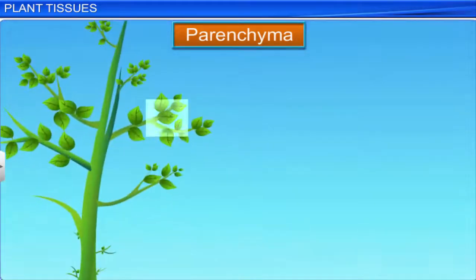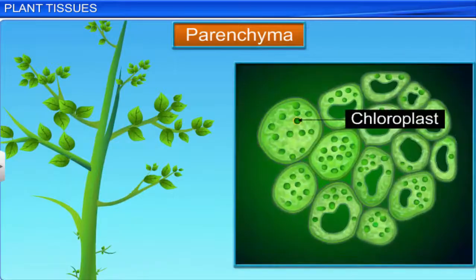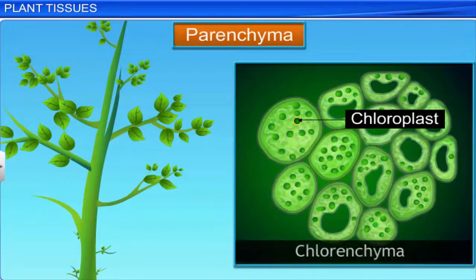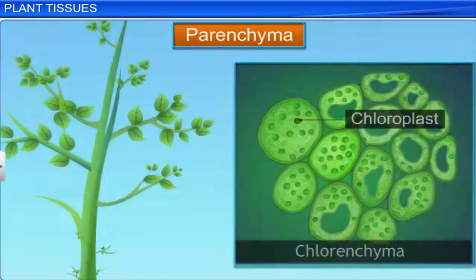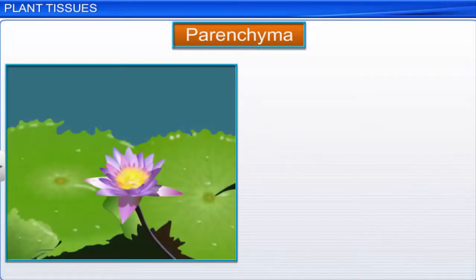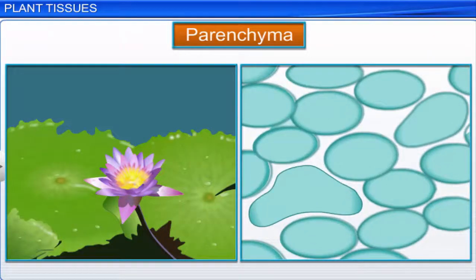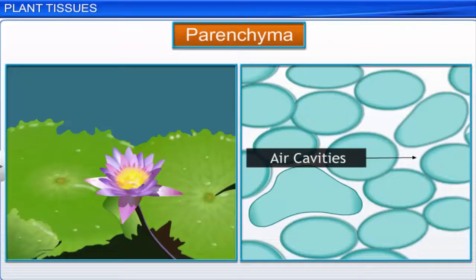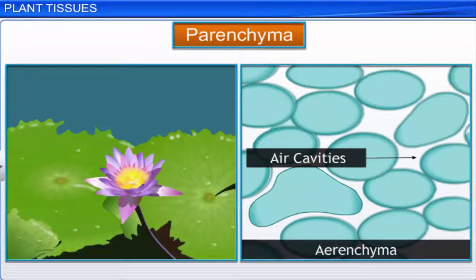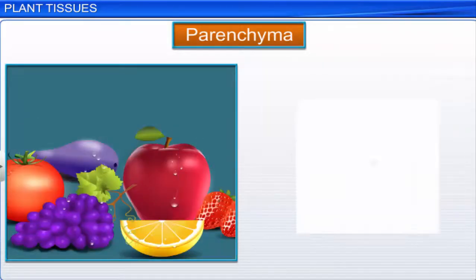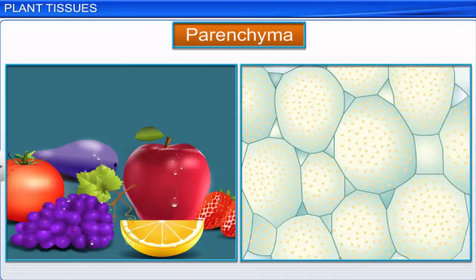In leaves, parenchyma cells contain chloroplasts and are called chlorenchyma, which helps in photosynthesis. In aquatic plants, parenchyma cells contain large air cavities that help in buoyancy and are called aerenchyma. Parenchyma cells in fruits and vegetables are filled with starch, which helps in food storage.